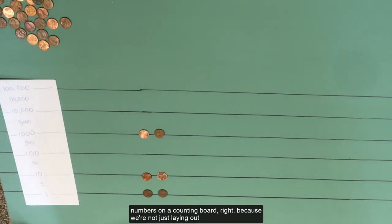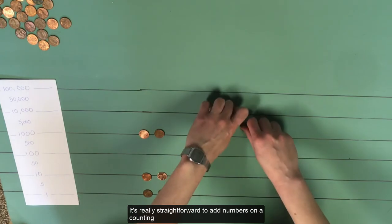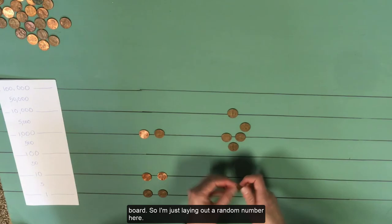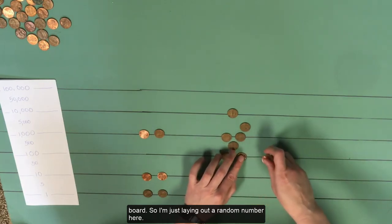So to add numbers on a counting board, because we're not just laying out these numbers for fun, we're doing this because we want to perform arithmetic. It's really straightforward to add numbers on a counting board. So I'm just laying out a random number here.